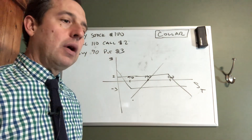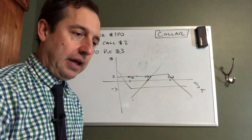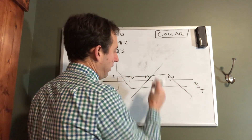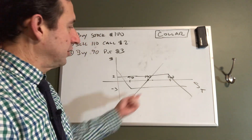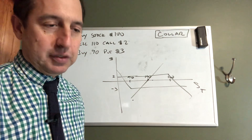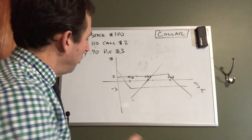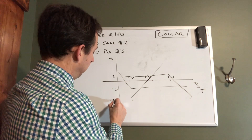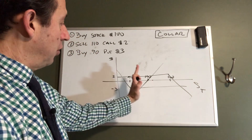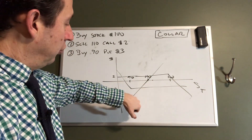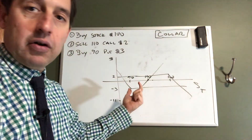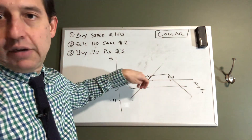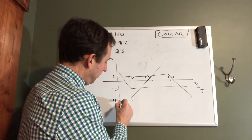Below 90, if the stock goes below 90, I lose on the stock but I gain on the put option. So for every dollar — if it goes to 89, I lose a dollar on the stock but gain a dollar on the put option. And I still earn my $2 on the call. So the spread is going to be flat below 90.